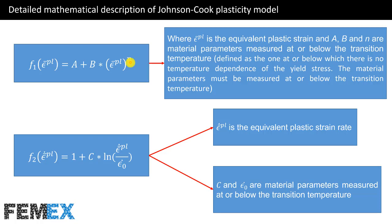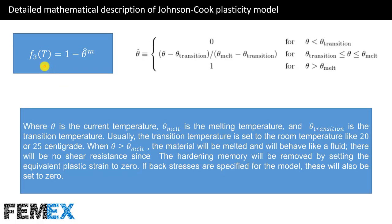The material parameters must be measured at or below the transition temperature. This is the detailed mathematical description of the F3 function, and this is the detailed mathematical description of the F2 function, where this variable is the equivalent plastic strain rate. C and epsilon-dot-sub-zero are material parameters measured at or below the transition temperature. Theta is the current temperature, theta-sub-melt is the melting temperature, and theta-sub-transition is the transition temperature.